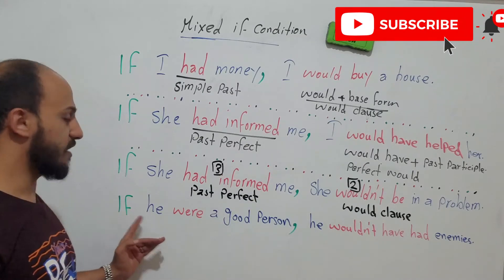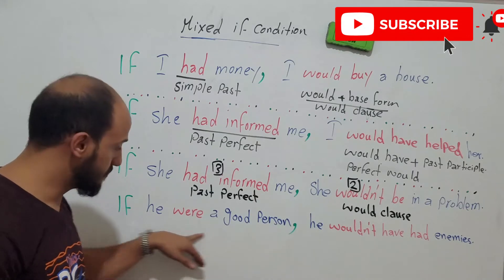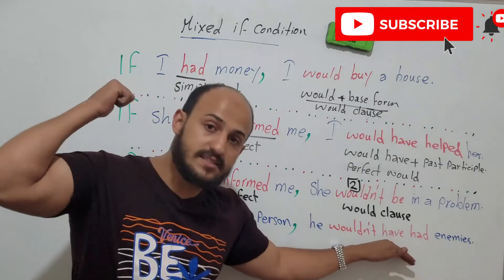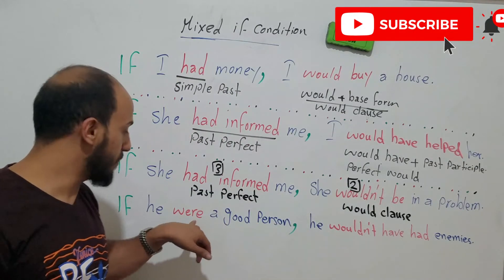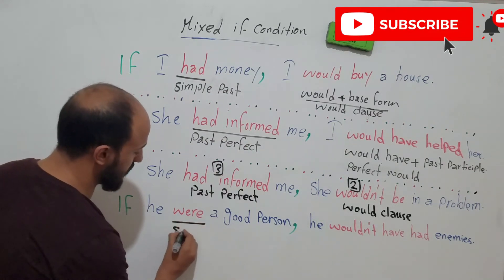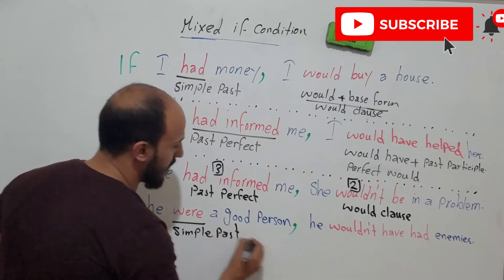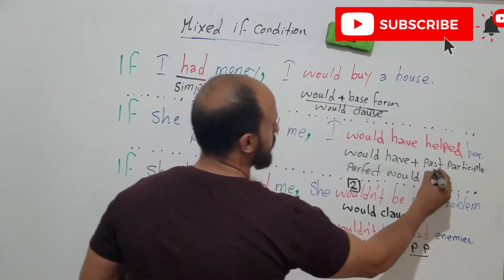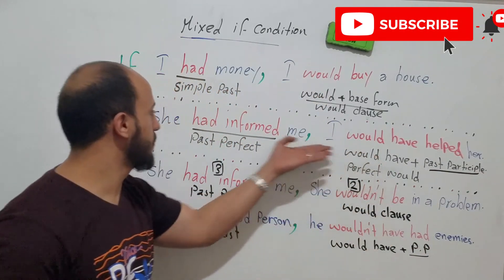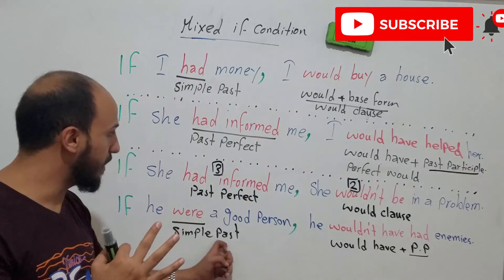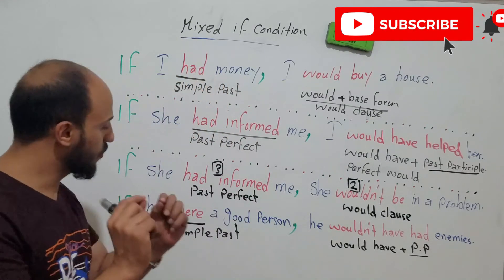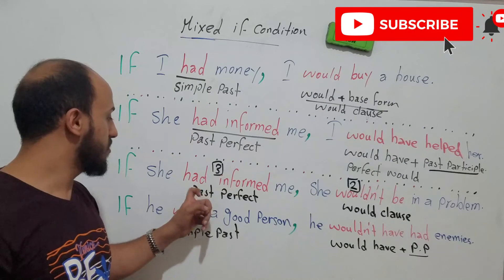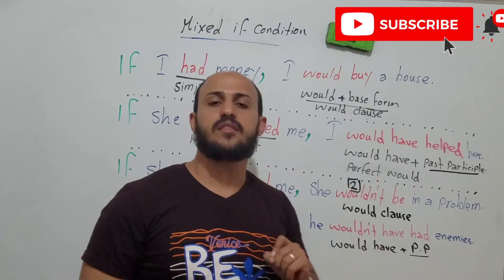You can also use a different structure after 'if'. For example: 'If he were a good person, he wouldn't have had enemies.' Here the 'if' clause uses simple past — taken from the second conditional — and the result clause uses 'would have' plus past participle, taken from the third conditional. Note: in this pattern the 'if' clause refers to the present and the result clause refers to the past.